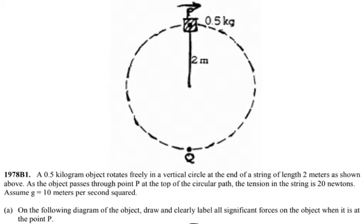1978 AP Physics B exam. A 0.5 kg object rotates freely in a vertical circle at the end of a string of length 2 meters as shown above.